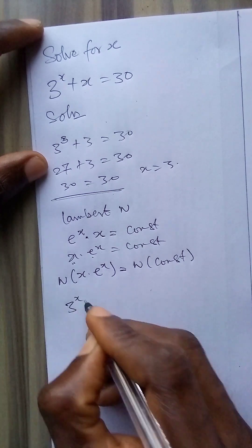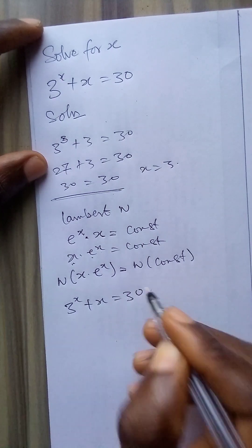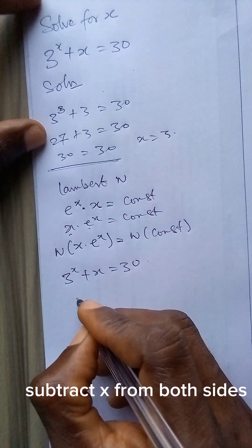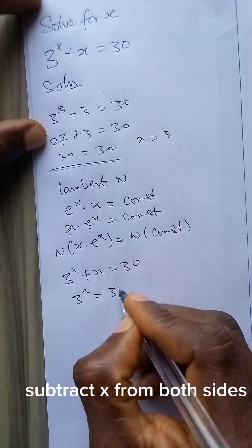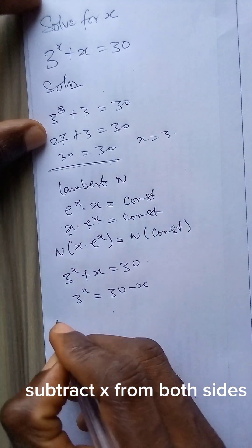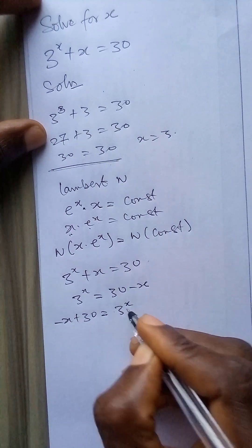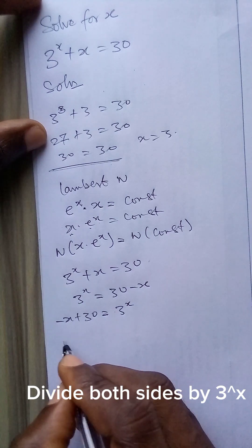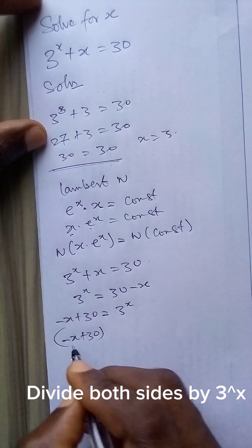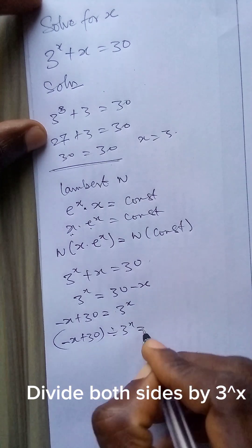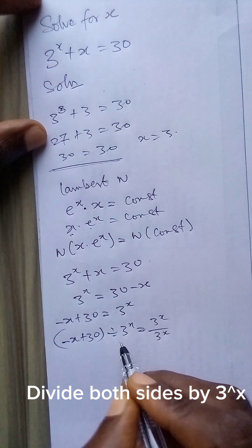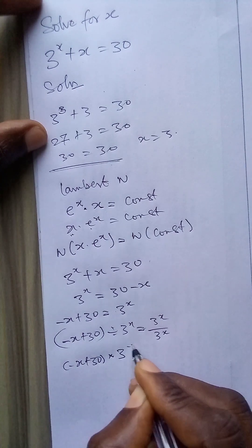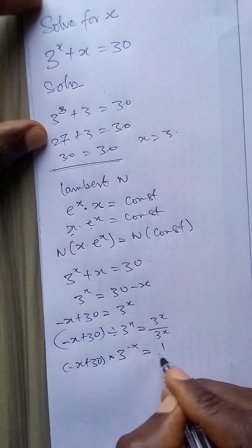Our aim is to manipulate the problem so it looks like that form, then take the Lambert W of both sides. Starting with 3 to the power x plus x equals 30, the first thing I do is take x to the other side: 3 to the power x equals 30 minus x. I now divide both sides by 3 to the power x, giving minus x plus 30 times 3 to the power minus x equals 1.